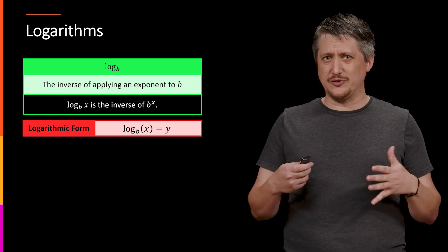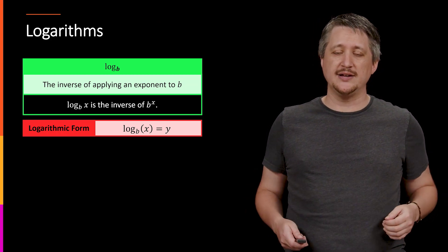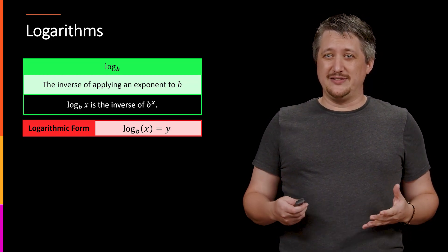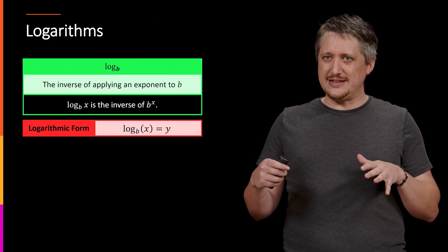So looking at this then, we have what's usually referred to as the logarithmic form. So we have that log base b of x equals y. But again, logs are sort of artificial in some sense. They do crop up in sort of natural areas a little bit here and there.